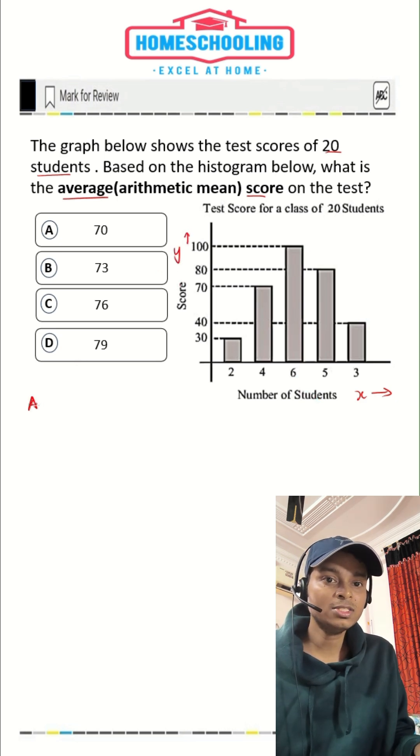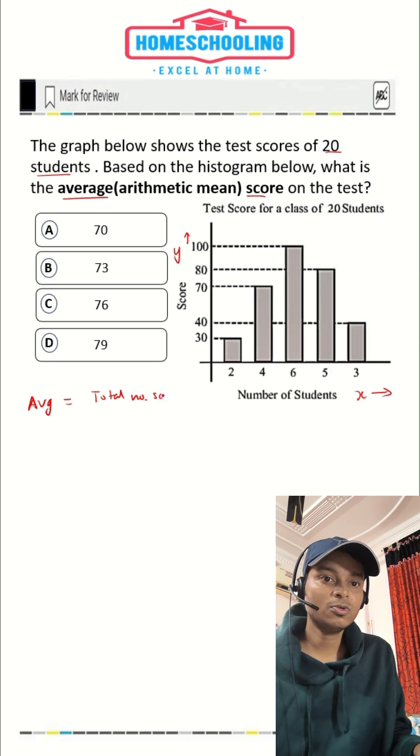So what is going to be our average? Average is going to be total score divided by total number of students.